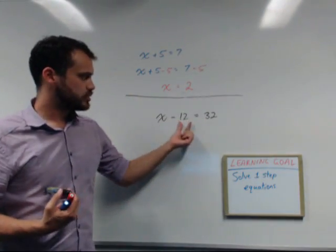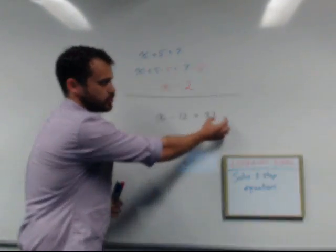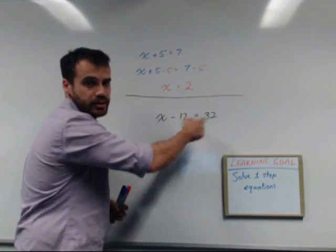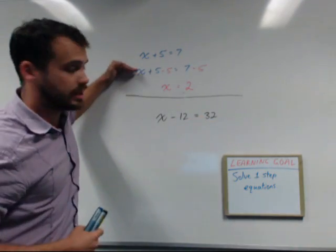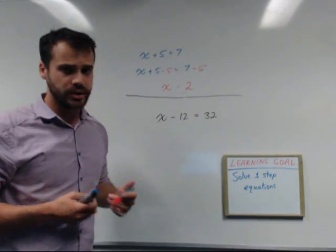x minus 12 equals 32. Now you could do this by adding 12 to both sides. And that creates that line there and then the next line. Most of us have moved beyond that stage,